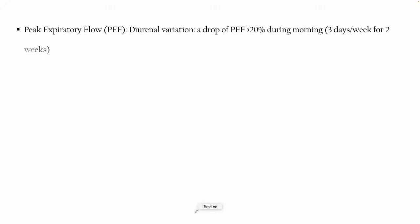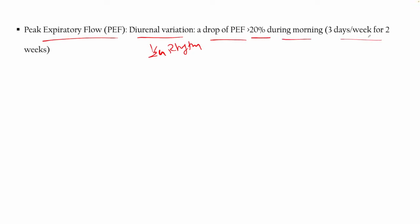Peak expiratory flow (PEF) can be measured for diurnal variation — the 24-hour rhythm cycle. A drop of PEF less than 20% during the morning can be checked. You can do this three days per week for two weeks.